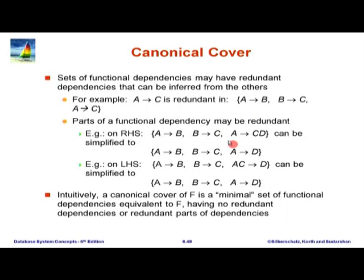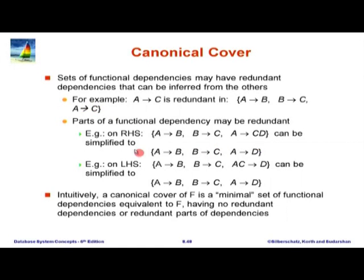There are also partial redundancy problems. For example, given A determines B, B determines C, and A determines CD: since A determines C can be inferred from the first two via transitivity, we can delete C from the right-hand side of the third dependency. We can use the decomposition rule to split A determines CD into A determines C and A determines D, then delete A determines C as redundant. That is removing an attribute from the right-hand side, ensuring we do not lose any dependencies.